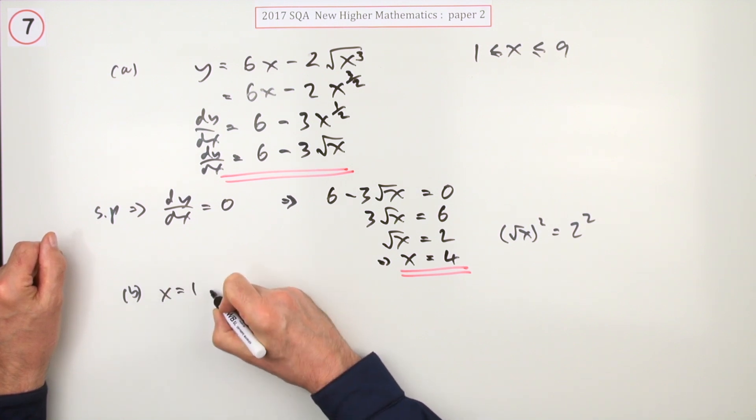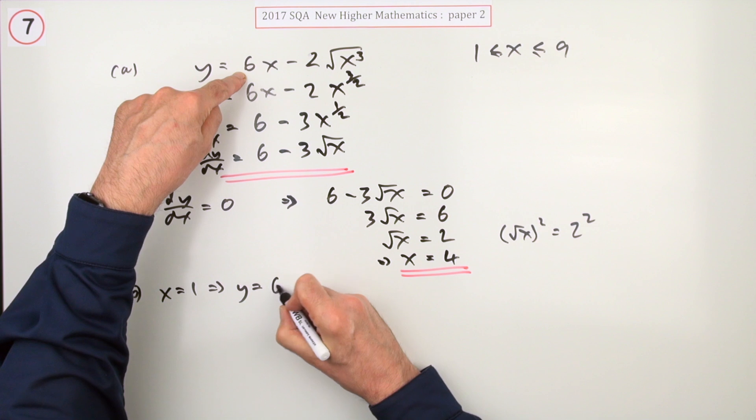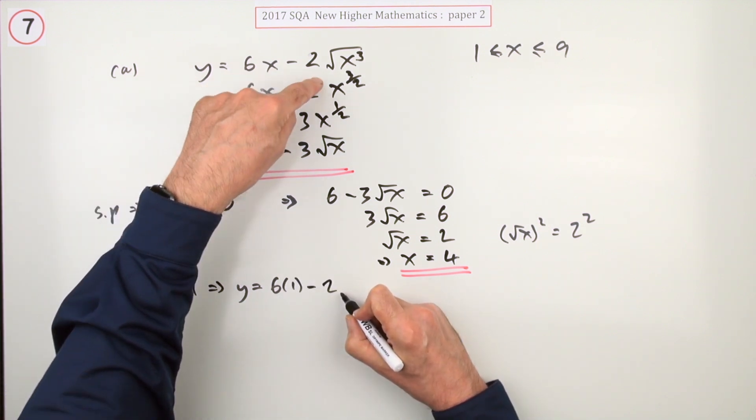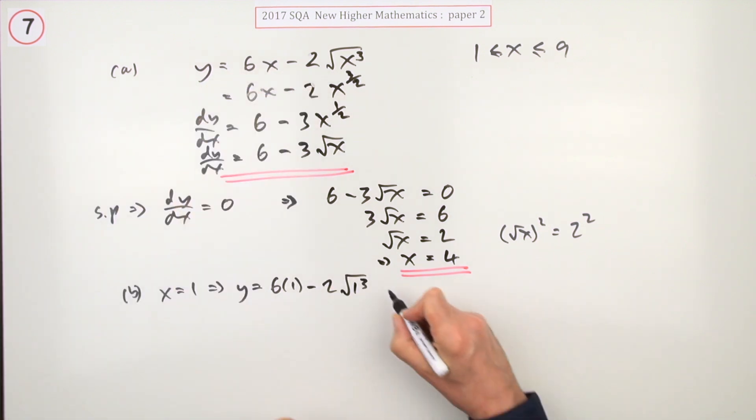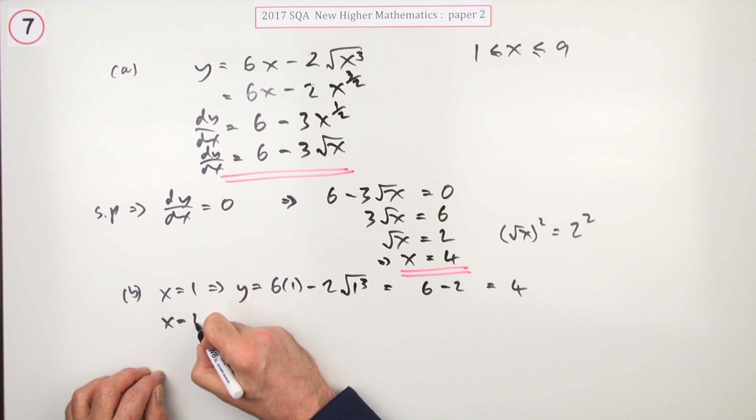So you just have to work it out. When x is one, what's y equal to? So you just pop it in here. It'll be 6 times 1 minus 2 times the square root of 1 cubed. So that's a 6 minus a 2, which is 4.